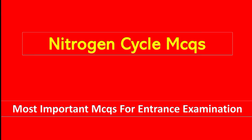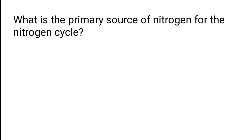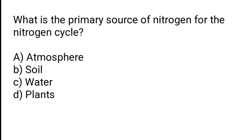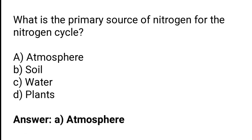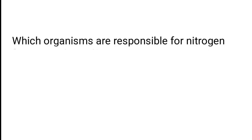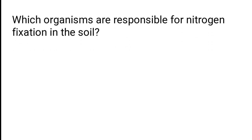Welcome to our new video. In this video we will be going through our Nitrogen Cycle MCQ. The first question: what is the primary source of nitrogen for the nitrogen cycle? The options are atmosphere, soil, water, or plants. The correct answer is option A — atmosphere is the primary source of nitrogen for the nitrogen cycle.